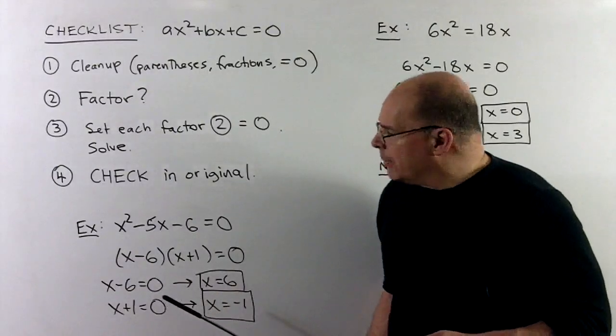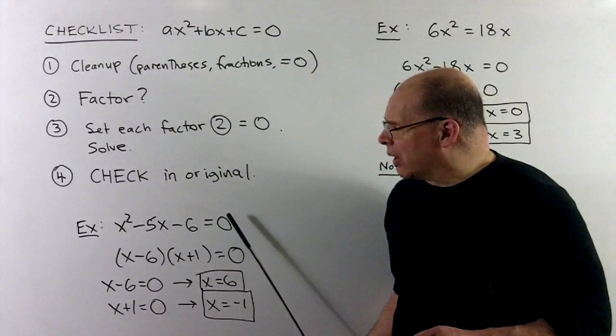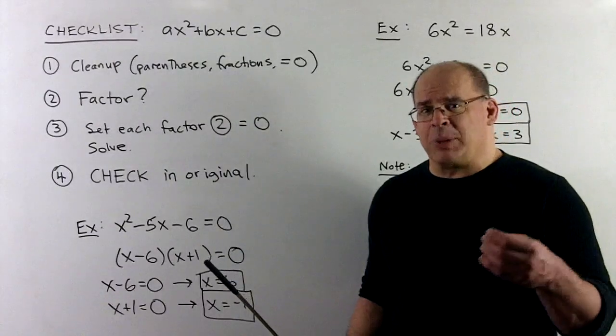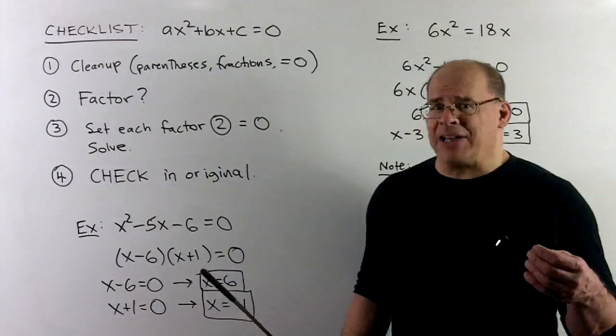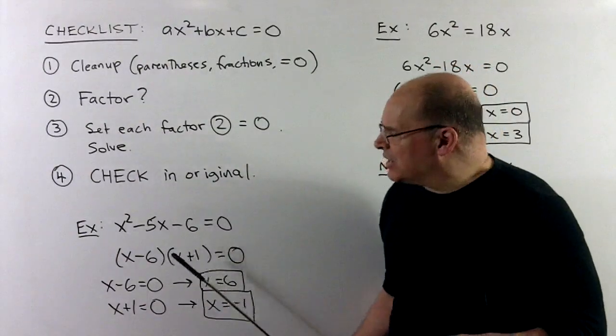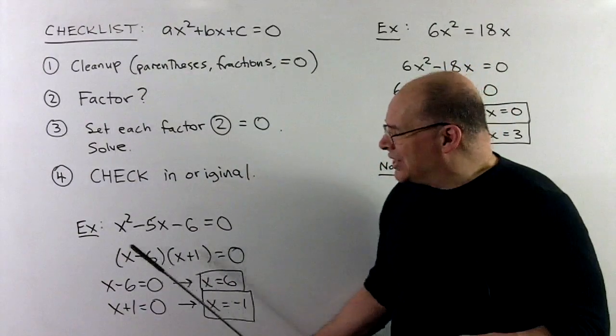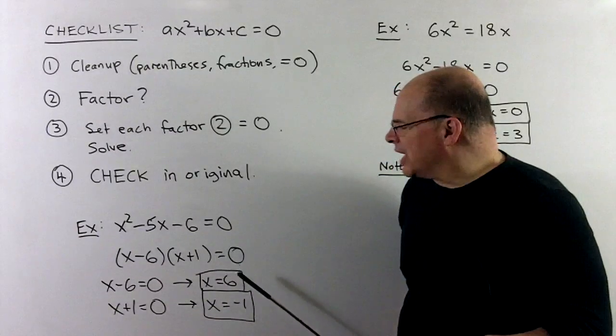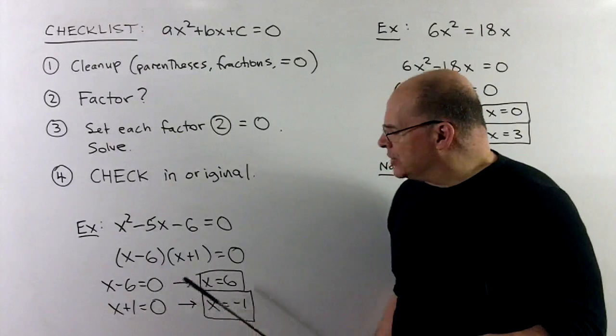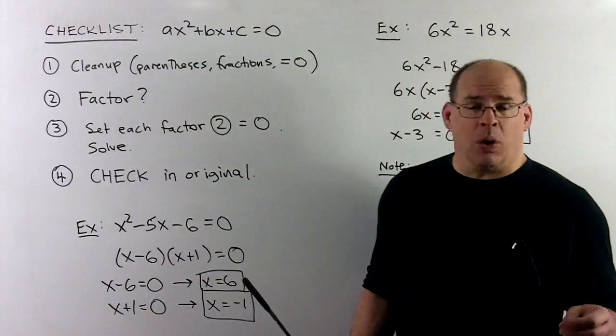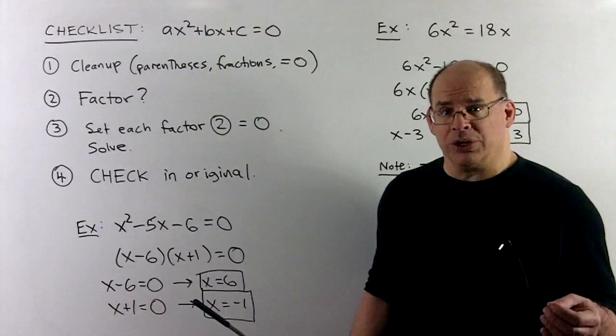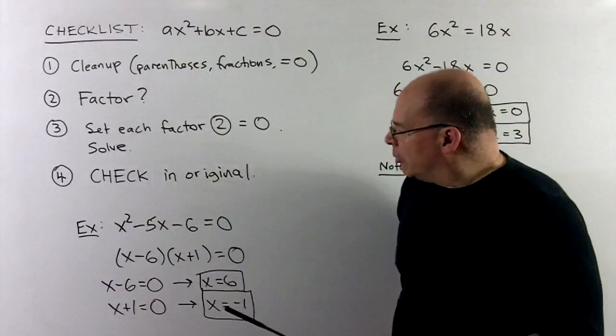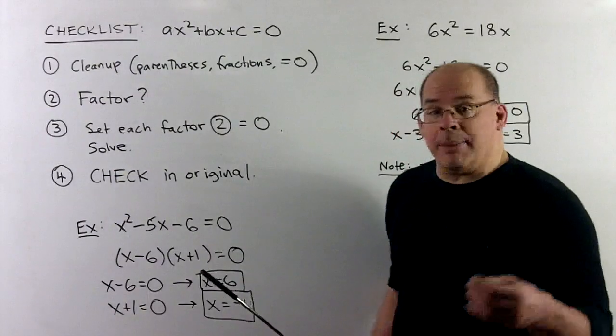Let's try an example. We have x squared minus 5x minus 6 equals zero. We factor. So that's x minus 6 times x plus 1 equal to zero. I set each factor equal to zero. x minus 6 equals zero goes to x equals 6. x plus 1 equals zero goes to x equal to minus 1. So I get 6 and minus 1 for solutions. Of course, we should check our work, but I'll leave that to you since I'm out of room here.